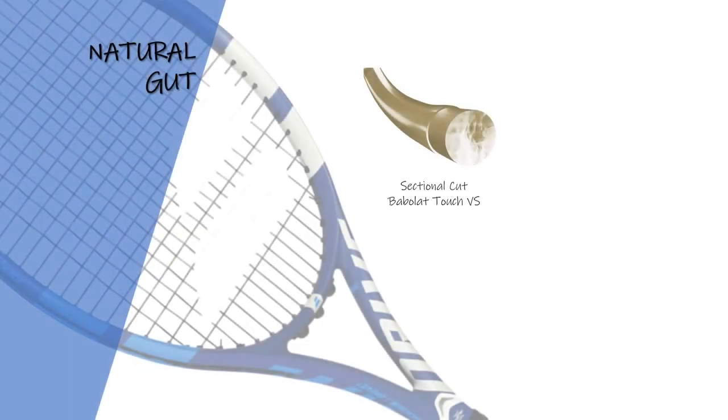Natural gut is more expensive than synthetic and has been around since 1870 when Pierre Babola created his first string from sheep intestines. Nowadays, natural gut is made with the healthy intestines of two cows.